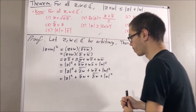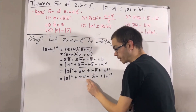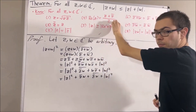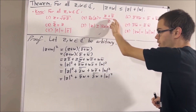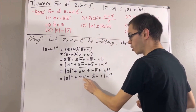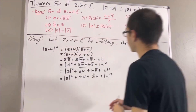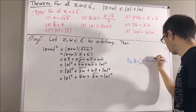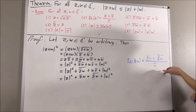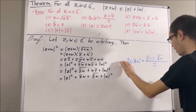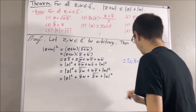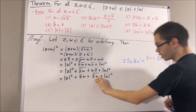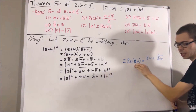Notice what we have: z̄w plus the conjugate of z̄w. Applying result 4, taking z to be the complex number z̄w, we get z̄w + conjugate(z̄w) = 2 times the real part of z̄w.